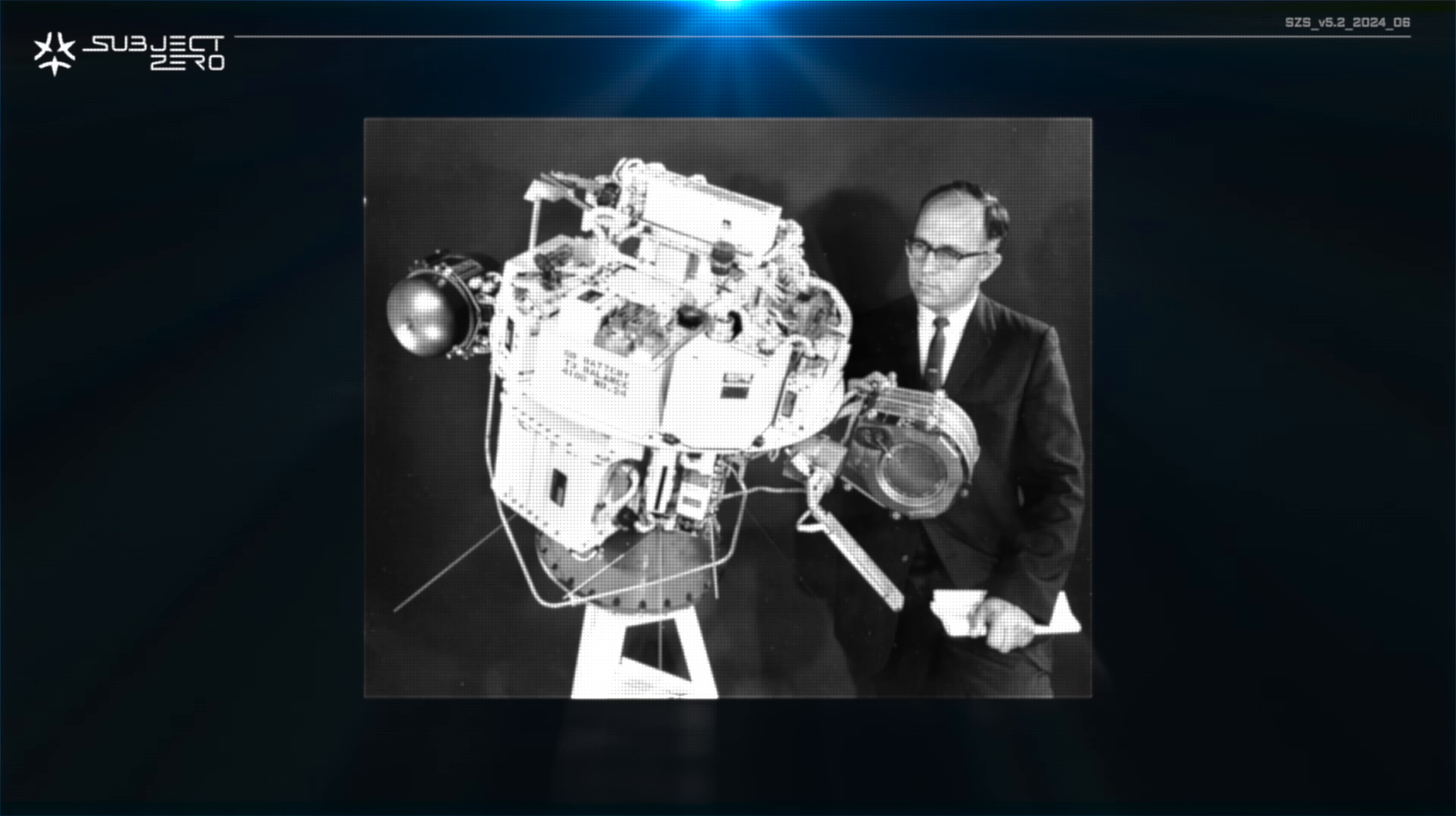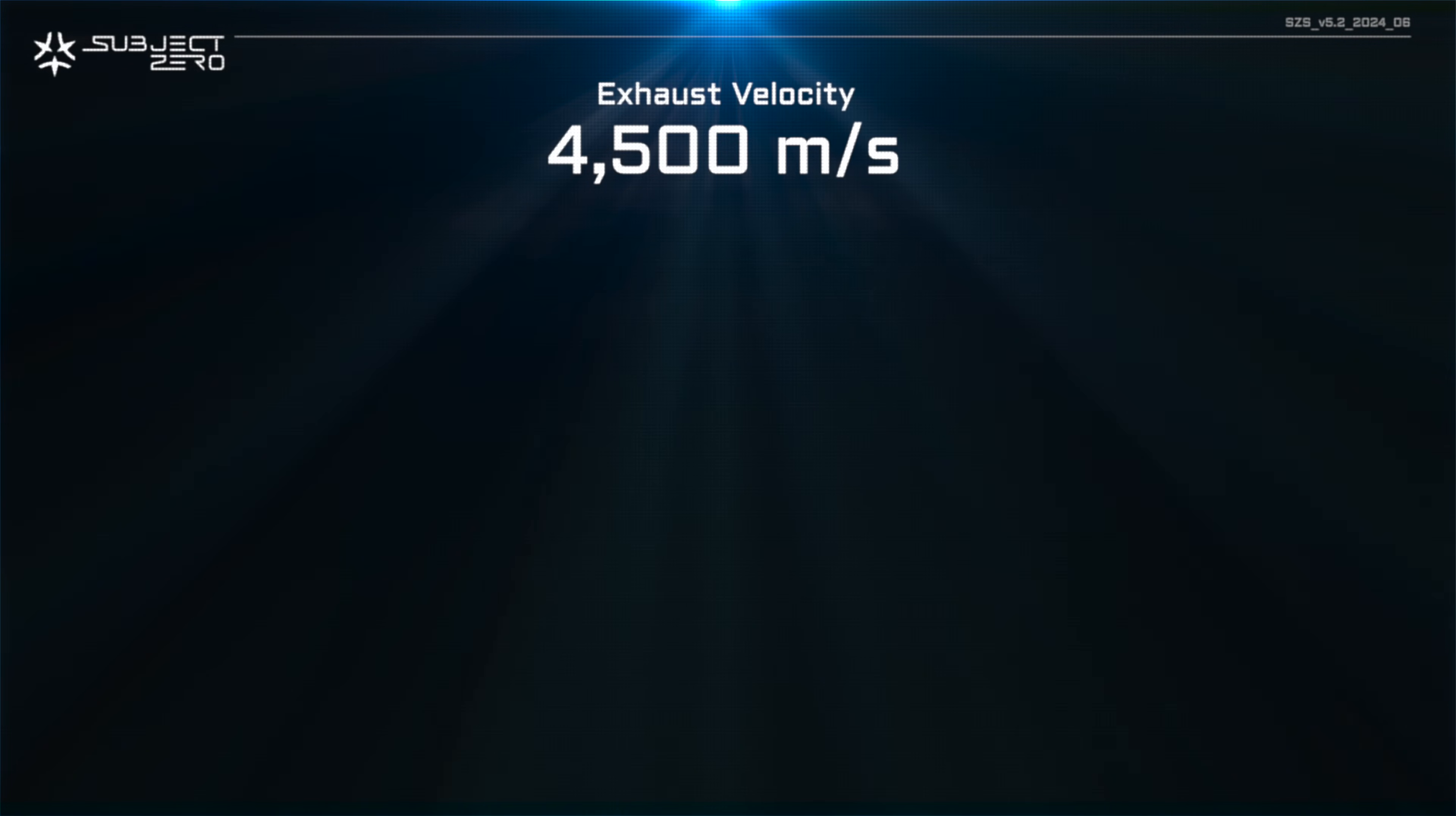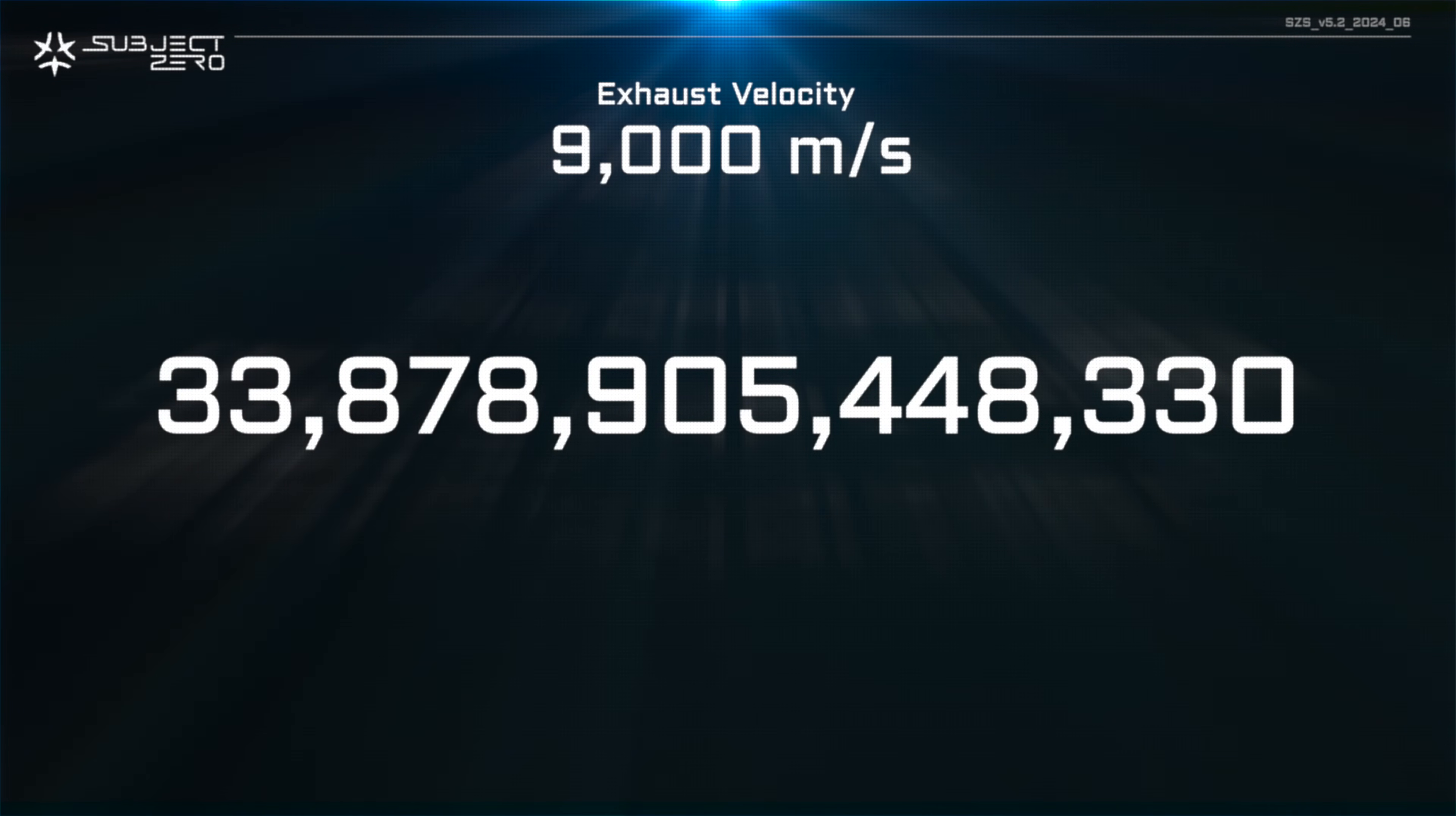This is the very reason why scientists are hard at work developing engines with higher efficiency, such as ion and nuclear. Everything comes down to effective exhaust velocity. Just by doubling it, which is what nuclear engines offer at minimum, fuel consumption drops by a factor of 140 million.